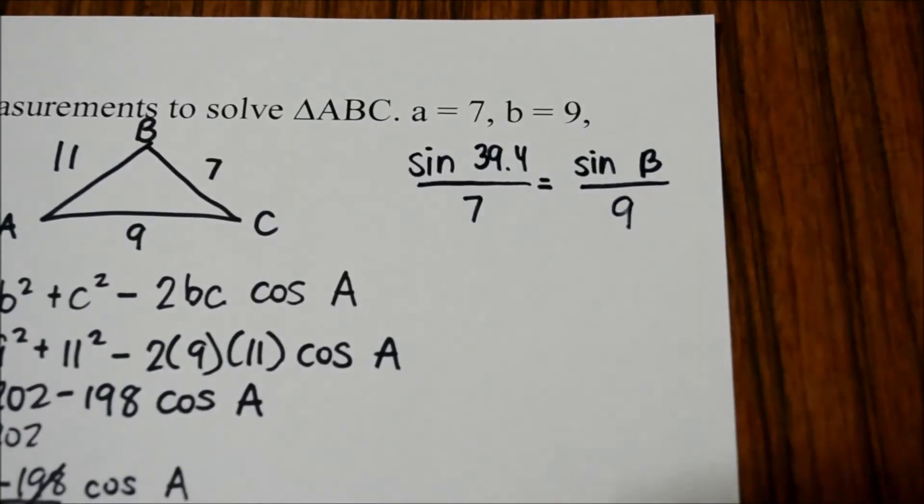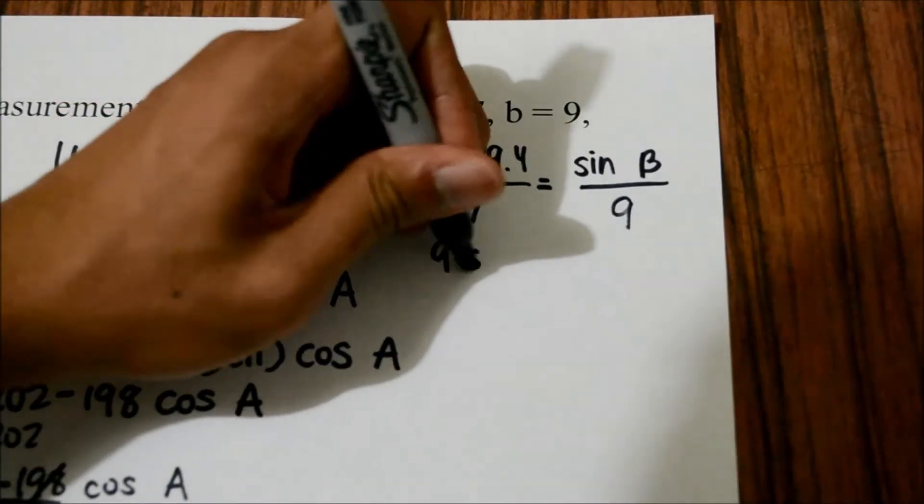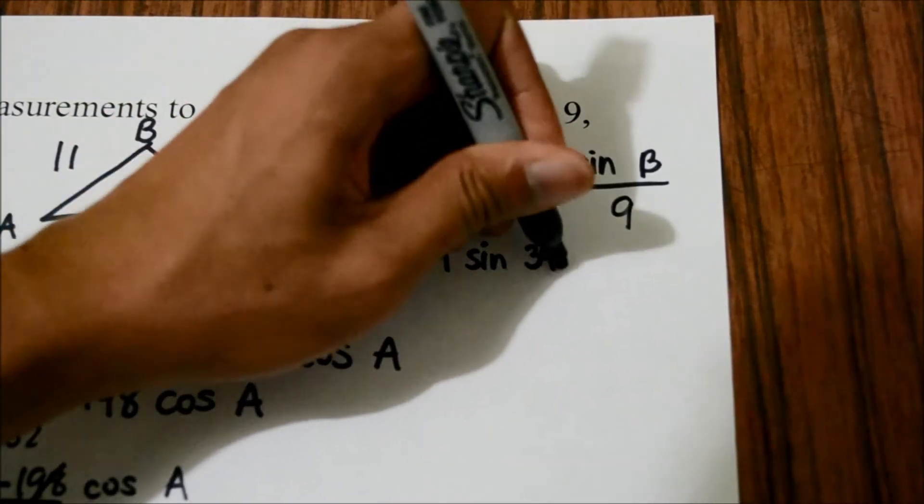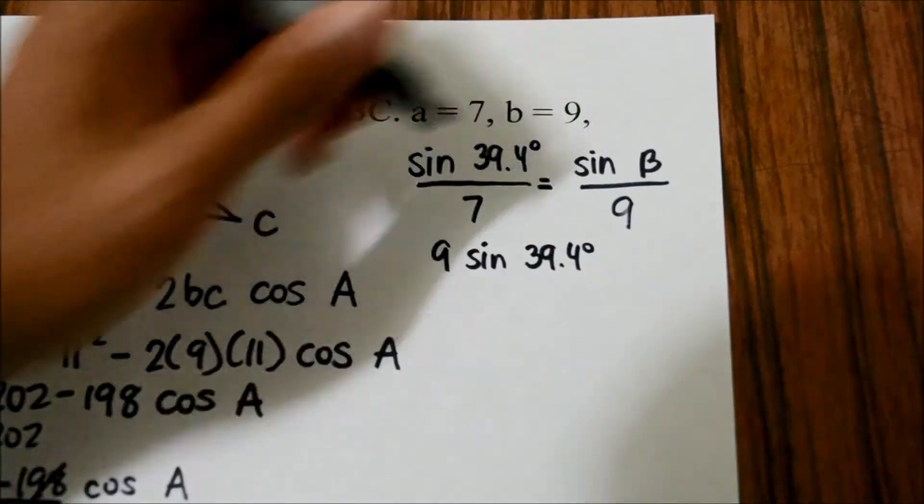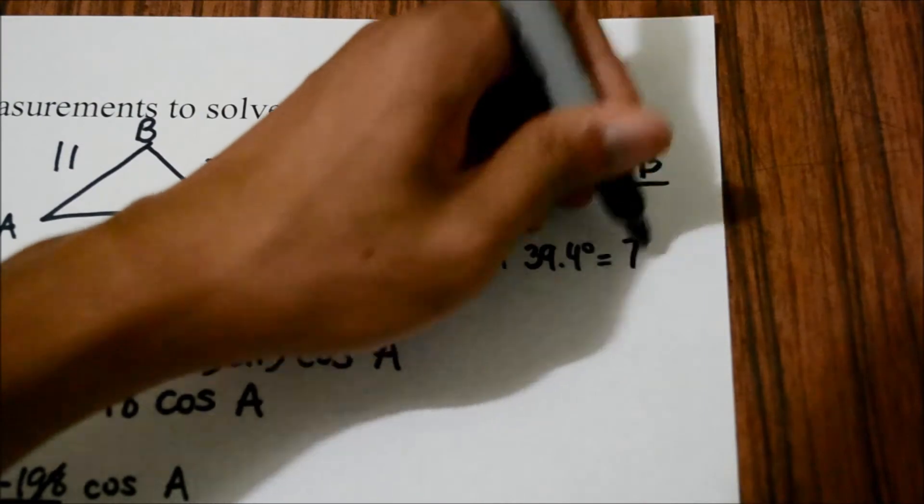We are making a proportion here where we have to cross multiply, and we would get 9 times sine of 39.4 degrees, don't forget the degree sign, equals 7 times the sine of B.